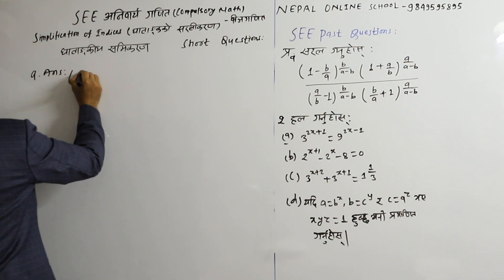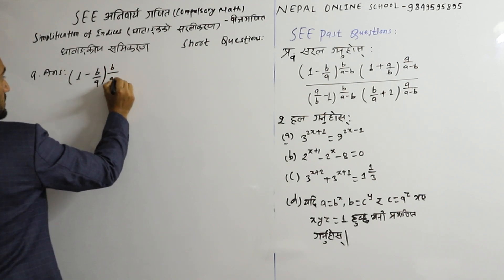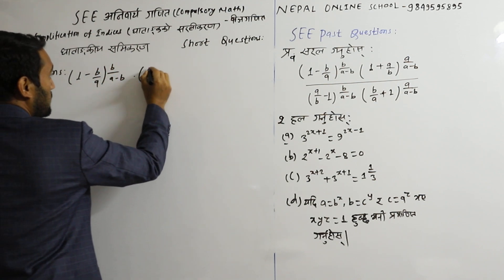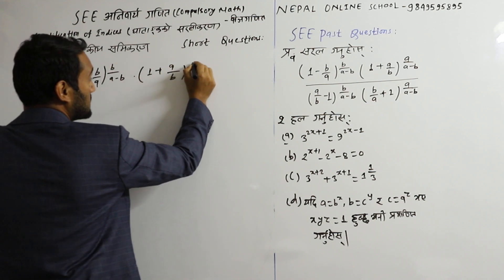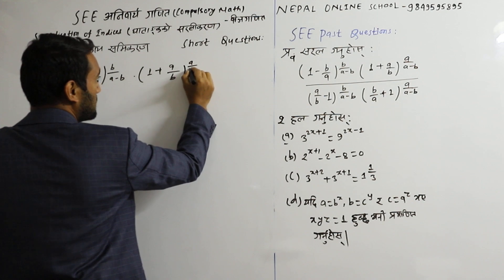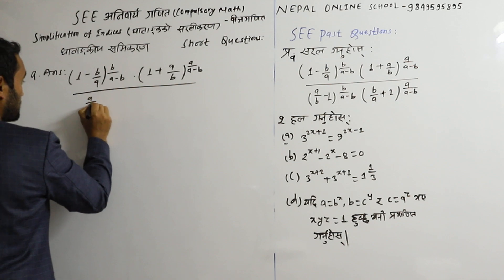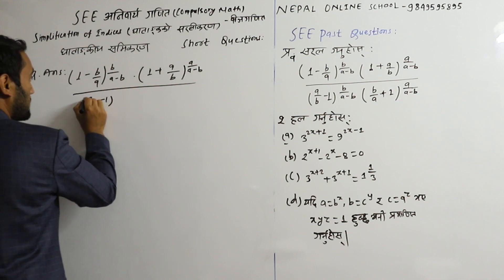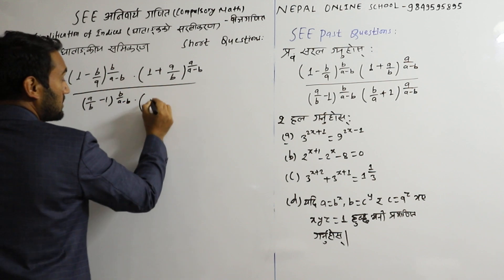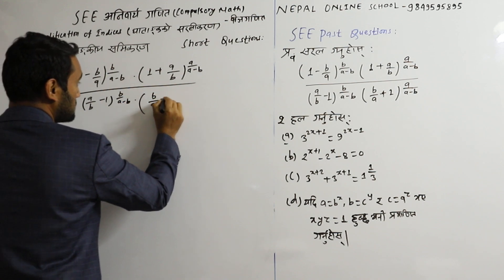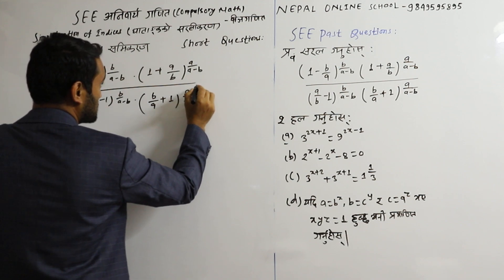We will answer: 1 minus b by a, power b upon a minus b. So, 1 plus a upon b to power a upon a minus b, divided by a by b minus 1 to power b upon a minus b, into b by a plus 1 to power a upon a minus b.